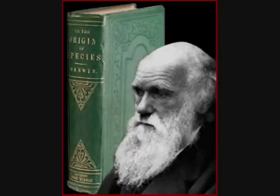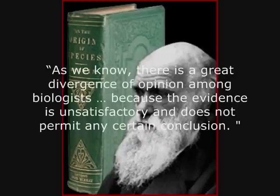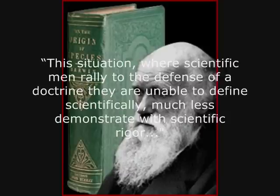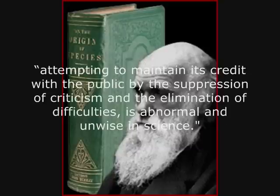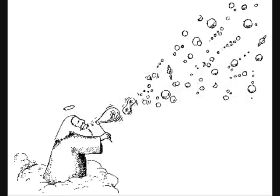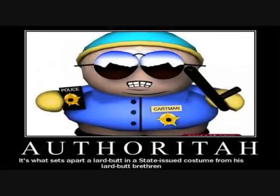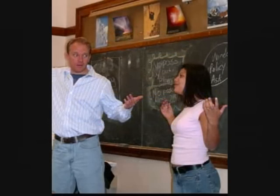The next quote is from a 16-page introduction to the 1956 edition of Darwin's Origin of Species: 'There is a great divergence of opinion among biologists, because the evidence is unsatisfactory and does not permit any certain conclusion. It is therefore right and proper to draw the attention of the non-scientific public to the disagreements about evolution. This situation, where scientific men rally to the defence of a doctrine they are unable to define scientifically, much less demonstrate with scientific rigour, attempting to maintain its credit with the public by suppression of criticism and the elimination of difficulties, is abnormal and unwise in science.' This particular quote is a creationist favourite. Here we see firstly that this well-poisoning tactic has been used before — 53 years before Comfort thought of it. This quote and the introduction it comes from represent an argument from authority. We are told by an eminent scientist of a great divergence among biologists, yet he fails to name them.